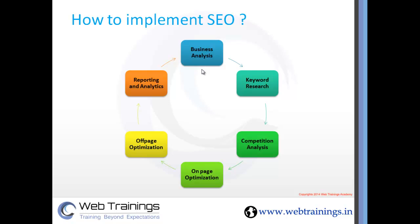Next, we do on-page optimization. Based on the keywords selected and data collected, we have a content writer produce unique, energetic, and well-written articles that speak to the customer about what we are offering. There are various elements to implement as per SEO guidelines: we optimize the title, description, image tags, URLs, and content keywords. These optimizations make our website compliant with SEO guidelines.